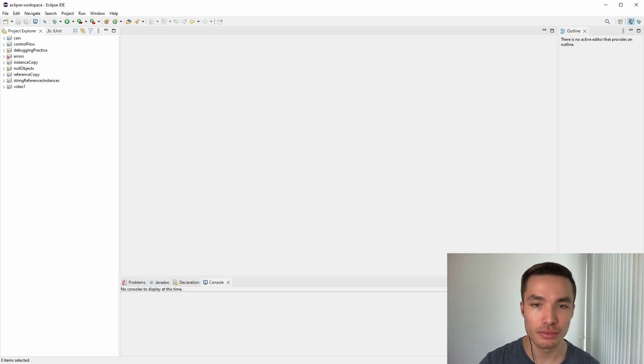JUnit is a popular testing framework that helps us write and run repeatable tests. This means we can test and debug our code much more easily than just writing print statements everywhere or manually tracing to see what is happening.